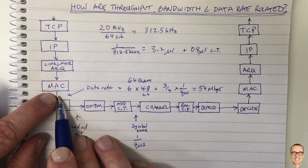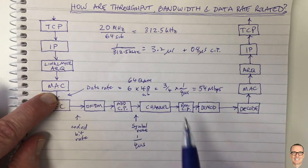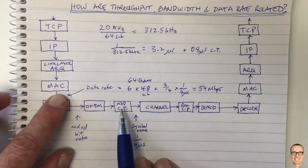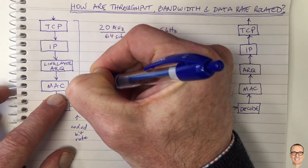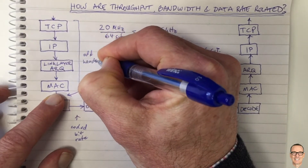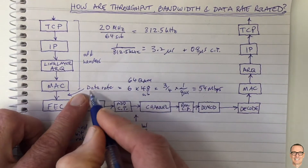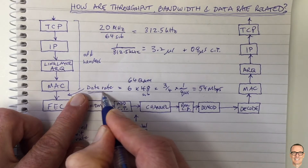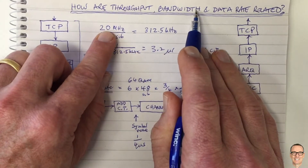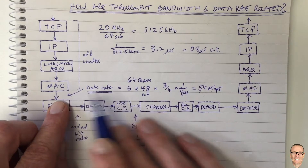This data rate takes into account the cyclic prefix between OFDM symbols, but it doesn't take into account all the headers. The layers of the protocol stack all add headers. So when thinking about the difference between data rate and throughput, we need to take these headers into account. To recap: we've talked about the bandwidth — that's 20 MHz — and we've now got the data rate of 54 Mbps.